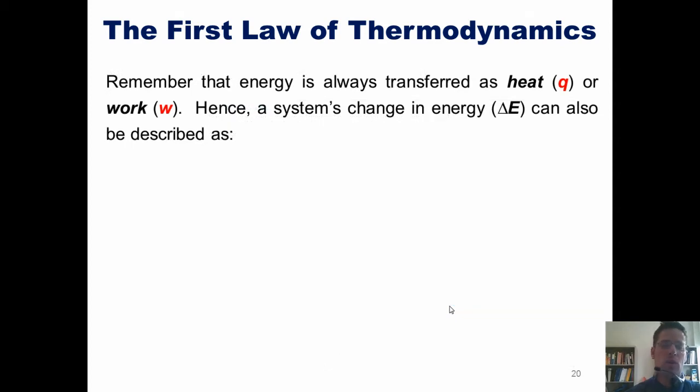So I want you to remember, as I stated earlier, that energy is always transferred as either heat or work, which are once again abbreviated as Q and W, respectively. Hence, a system's total change in energy, delta E, can also be described mathematically as delta E equals Q plus W, or heat plus work.